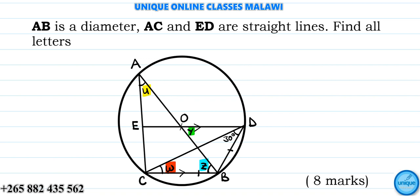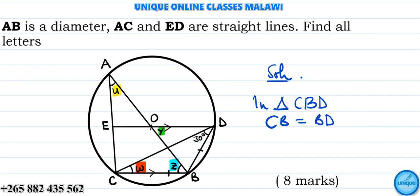I'm going to indicate that line BD, this line here, is the same as line CB. This implies that triangle CBD is isosceles. The reason is given, so you can just put it there: Given.